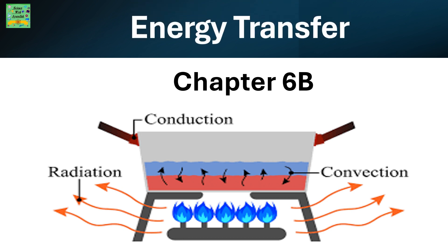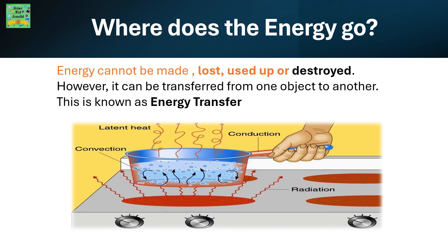Energy Transfer, Chapter 6b. Where do you think the energy goes? Energy cannot be made, lost, used up, or destroyed. However, it can be transferred from one object to another. This is known as energy transfer.